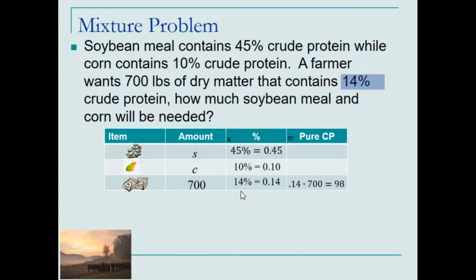We have 700 pounds of dry matter, which is 14% crude protein, so if we take 14% times 700, it will result in the crude protein, which is 98 pounds for the mixture.